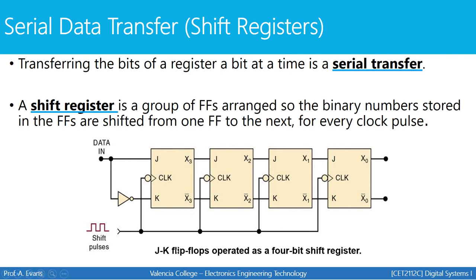Here's an example of a shift register. 'Data in' is the piece of data we want to store — a string of bits. Let's say I want to store the value 1001. With each clock signal, I'll send a single bit into the shift register. With the first clock transition, a 1 goes into the first flip-flop. On the next transition, that 1 shifts over and the 0 shifts in. On the third transition, data continues shifting forward through each flip-flop. With every clock pulse, data in one register shifts forward to the next.